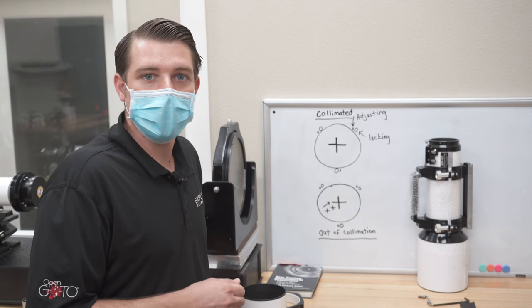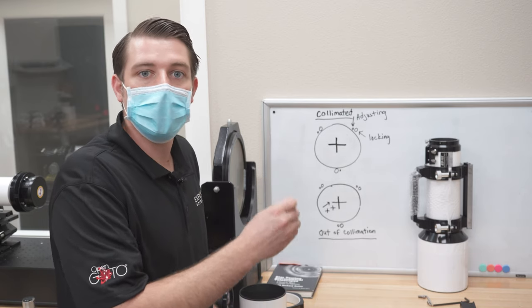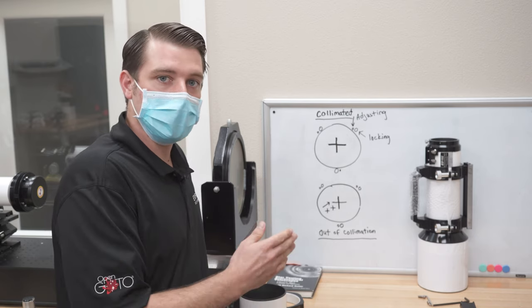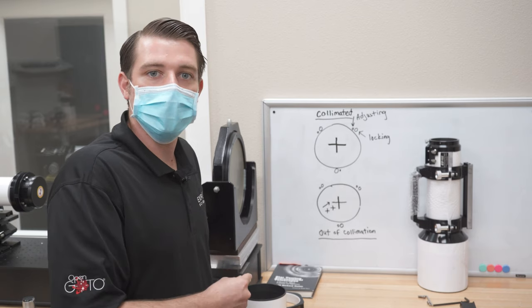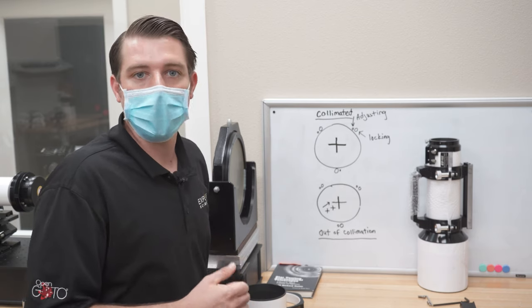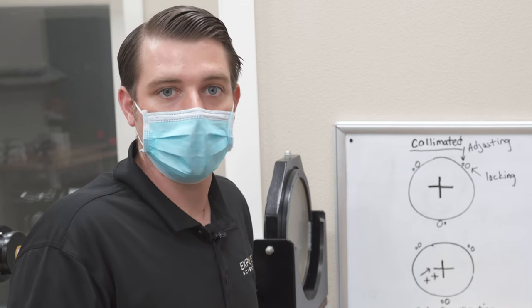If it's still out of place, you'll go back to the front of the lens cell, you'll loosen up those locking screws, do your adjustment on your adjusting screw and go back to the Cheshire and repeat the process as necessary. And don't forget to lock it. That will ensure that your collimation will stay in place after it's been achieved.